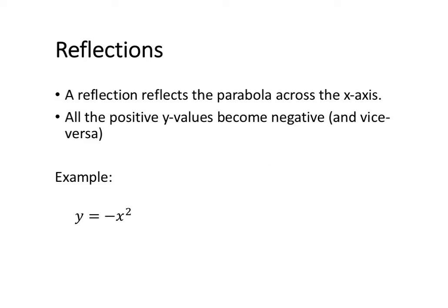The reflection will reflect the parabola across the x-axis. When we do this, all of our positive y-values will become negative values, but the value will remain the same, and vice versa. So if we already had negative values, then they would become positive values.